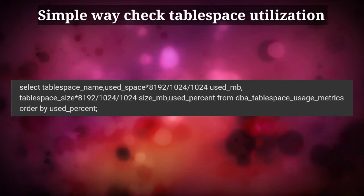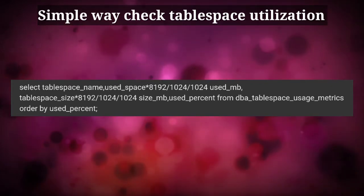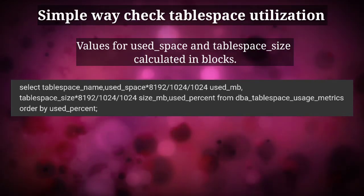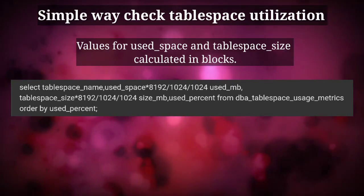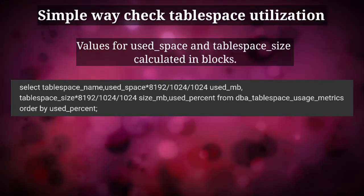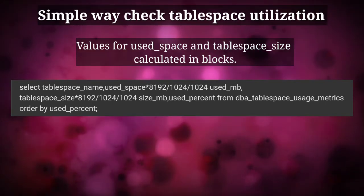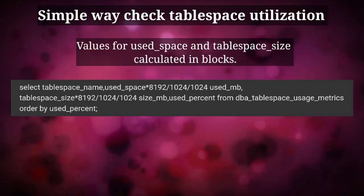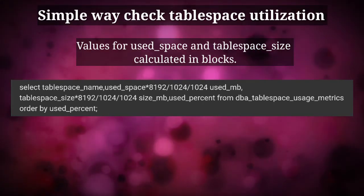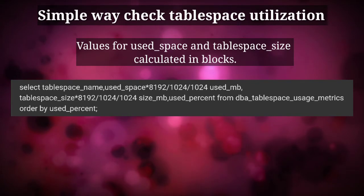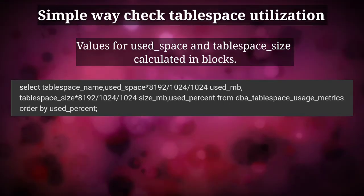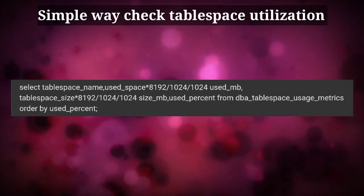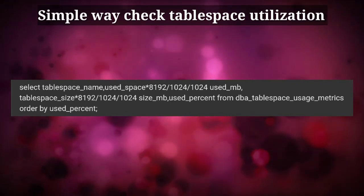The only thing you need to be careful about in this view is that the values for used space and tablespace size are calculated in blocks by default, so that needs to be converted to megabytes or gigabytes. That can be done by multiplying the current block size of the database — you can check the db_block_size parameter, which is 8192 in this example — and then dividing it two times by 1024 to convert it into megabytes.